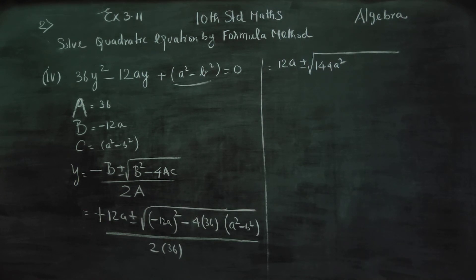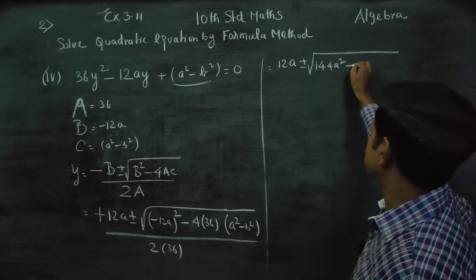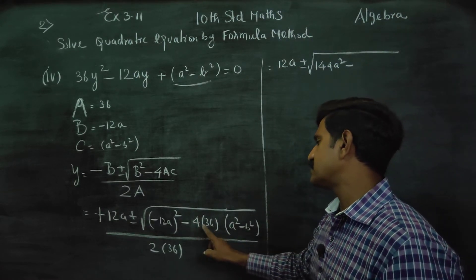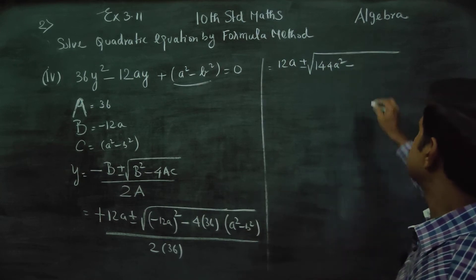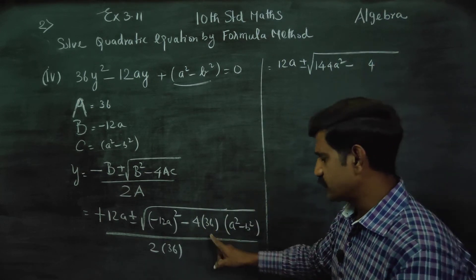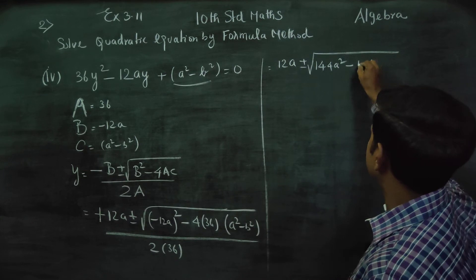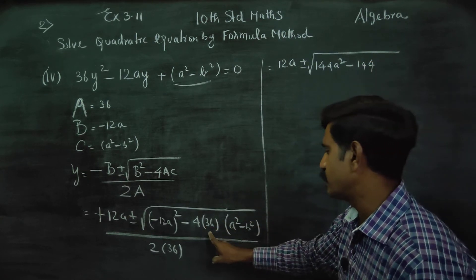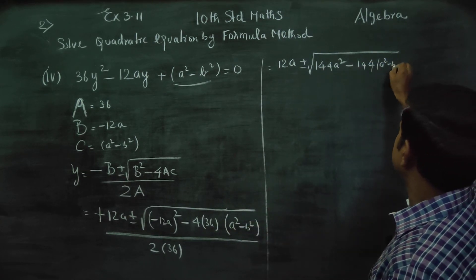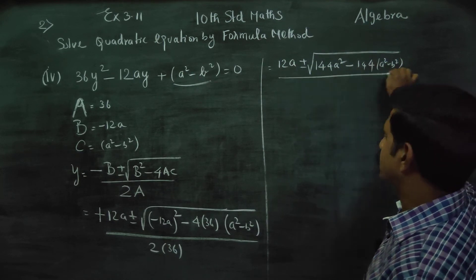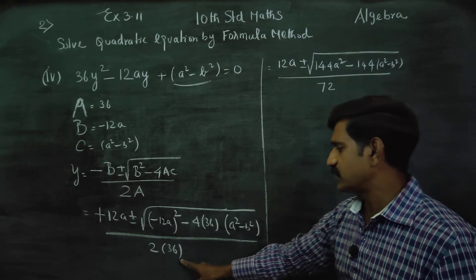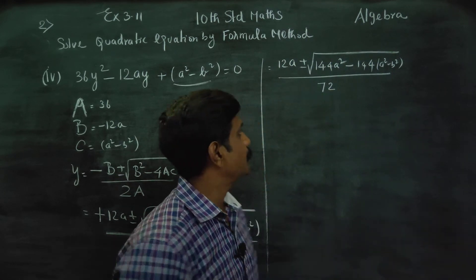144A squared minus 4 into 36 into the quantity A squared minus B squared, all divided by 72. 4 into 36 is 144. The expression becomes 144A squared minus 144 times the bracket A squared minus B squared, over 72.